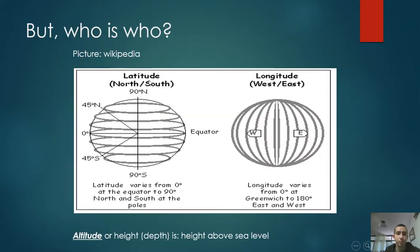But who is who? So this is a picture from Wikipedia, a very clear picture. You see the longitude varies from zero at Greenwich, also called the meridian, to 180 degrees to the east and west. The latitude varies from zero at the equator to the north and south poles, and altitude or height is the height above the sea level.